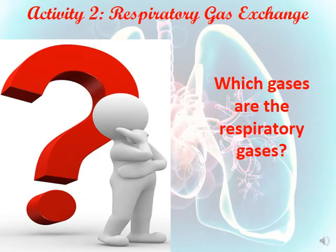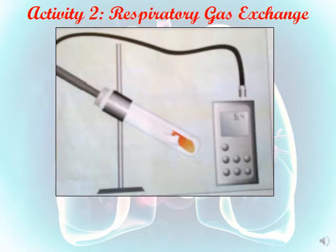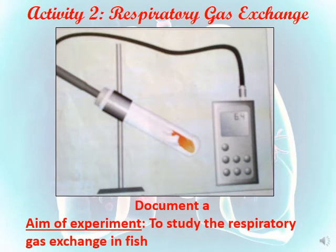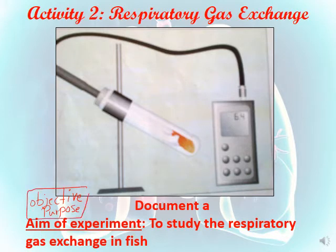To answer which gases are the respiratory gases, let's look at this experiment. We have a fish placed inside a test tube connected to a device that measures the amount of different gases. The aim — also called the objective or purpose — of this experiment is to study the respiratory gas exchange in fish. Objective, aim, and purpose all have the same meaning.